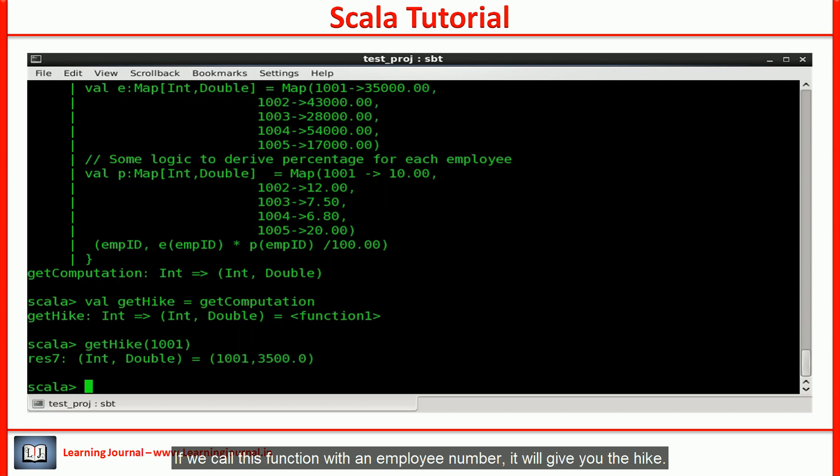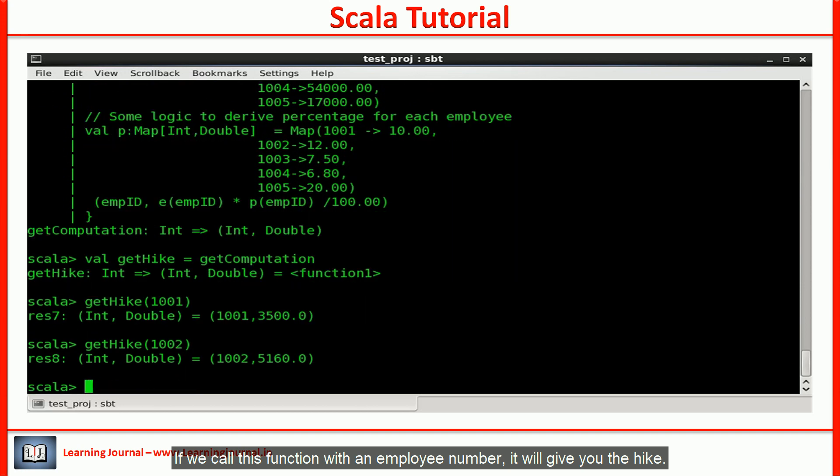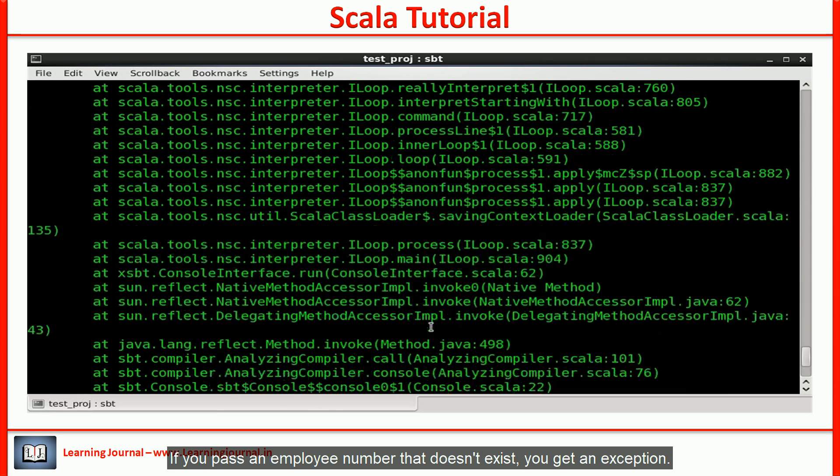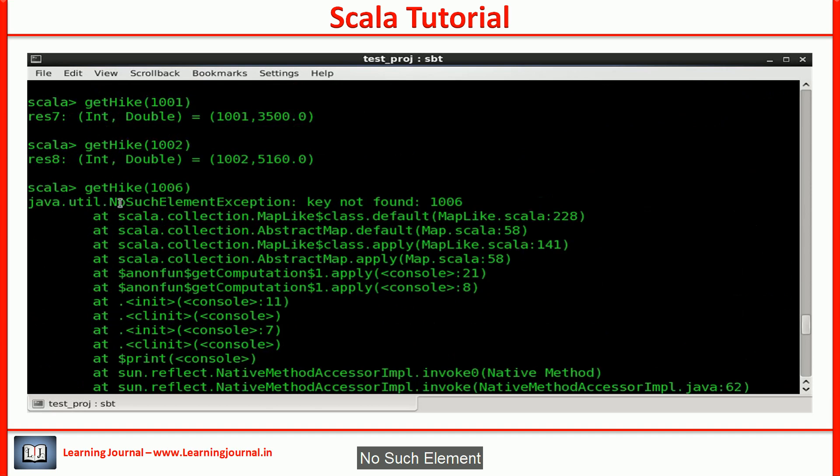If we call this function with an employee number, it will give you the hike. If you pass an employee number that doesn't exist, you get an exception: no such element.